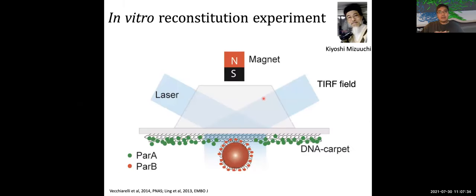My starting point is the recent in vitro reconstitution experiment by Kiyoshi Mizuki. His lab successfully reconstituted the minimum set of partition components capable of driving directed motility. The non-specific DNA substrate is covered with ParA ATPases. A micron-sized magnetic bead is covalently bound to ParB. A magnetic field is turned on to confine the bead near the surface of the substrate, and the subsequent dynamics are observed by TIRF microscopy.